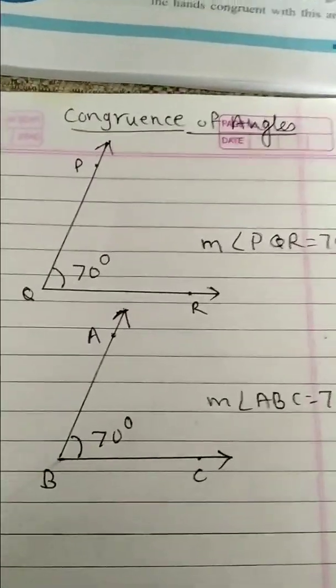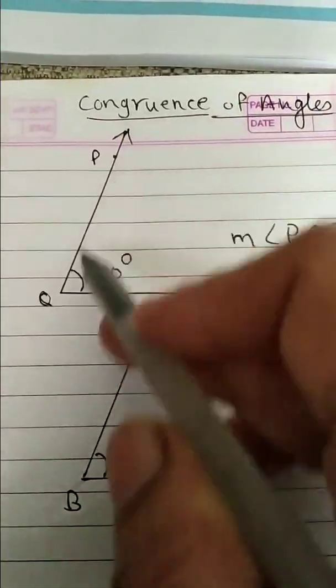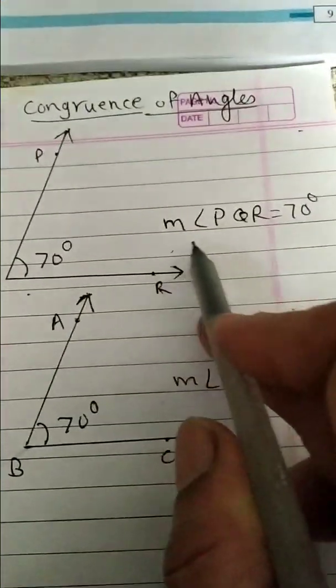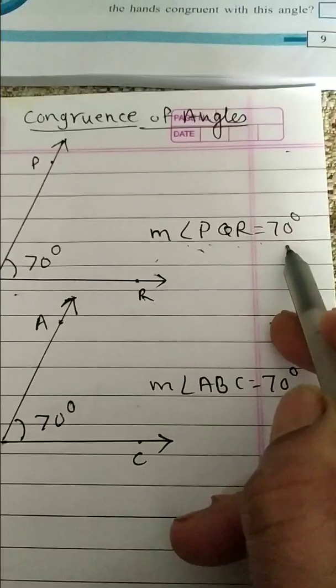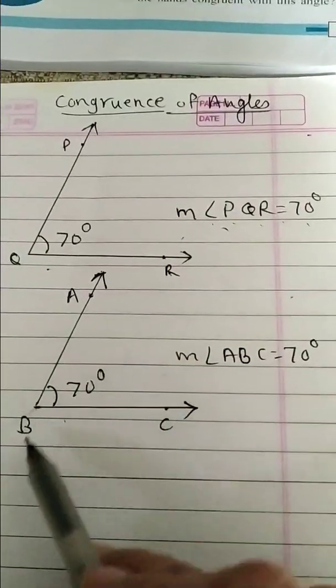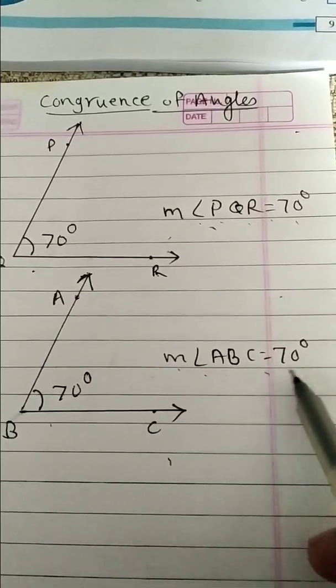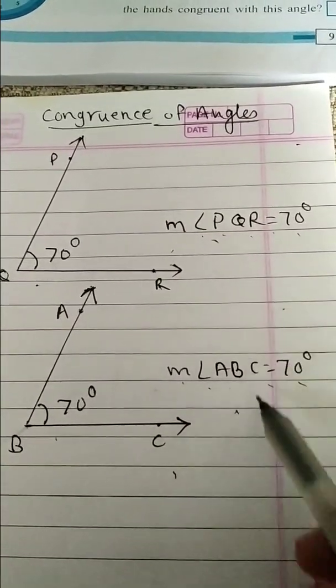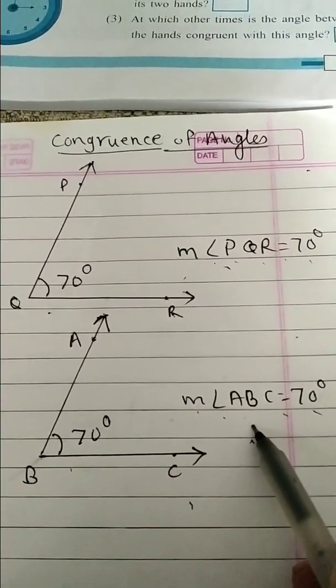Now we learn congruence of angles. Here angle PQR, the measurement of angle PQR is equal to 70 degrees. And here angle ABC, measurement of angle ABC is equal to 70 degrees. When we observe both the measures of the angles, we see that both the angles have equal measures.